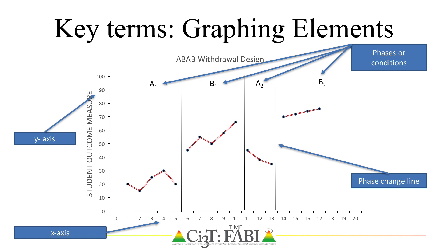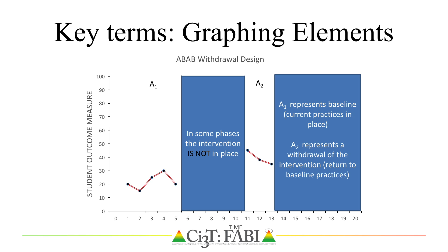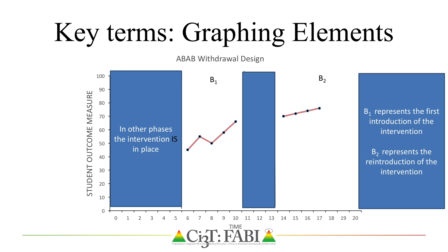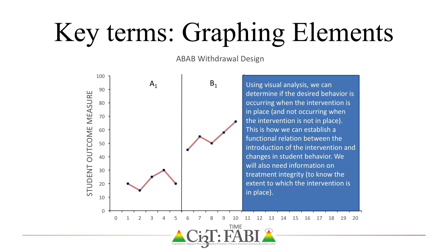B2 represents the reintroduction of the intervention. Using visual analysis, we can determine the occurrence of the behavior of interest when the intervention is and is not in place. That is how we determine if a functional relation exists between the introduction of the intervention and changes in student behavior — in other words, do changes in behavior only occur when the intervention is in place and not when the intervention is absent or removed?